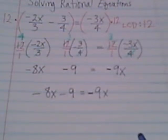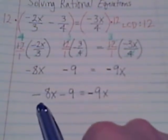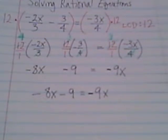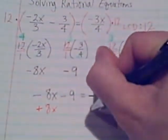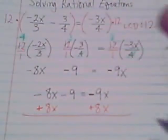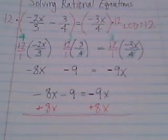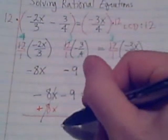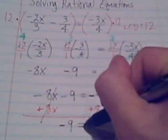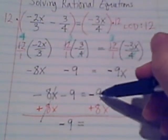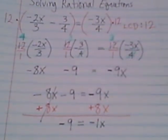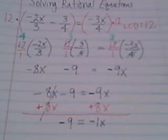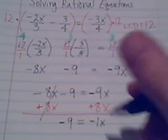I'll choose to move the negative 8x term over to the right side with the x term. To move or cancel a term, let's add 8x to both sides. We'll cancel on the left side. We have negative 9 on the left side. On the right side, negative 9x with positive 8x gives negative 1x.